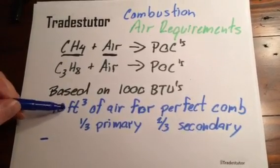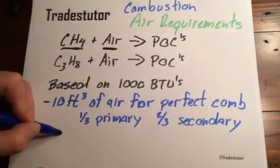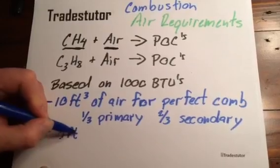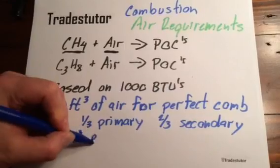So, if we have 10 cubic feet of air for perfect combustion, 50% of that is 5 cubic feet. And we call that excess air.